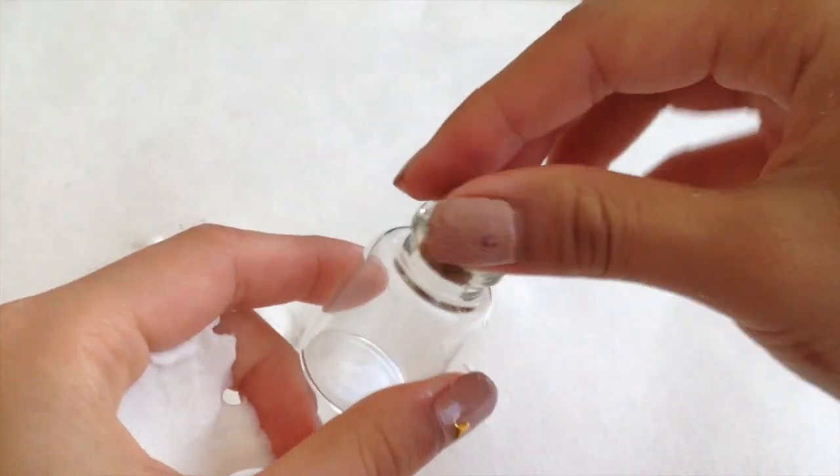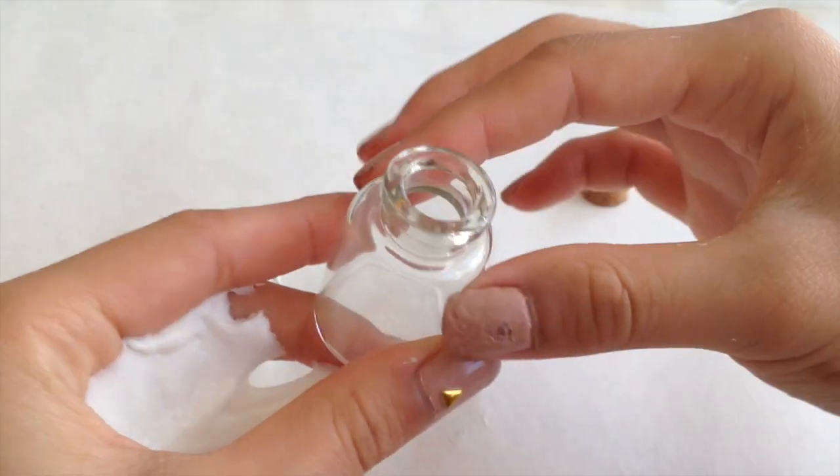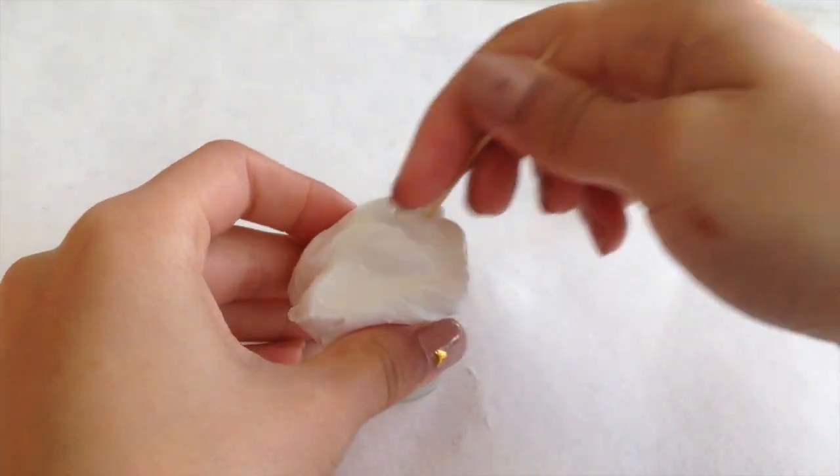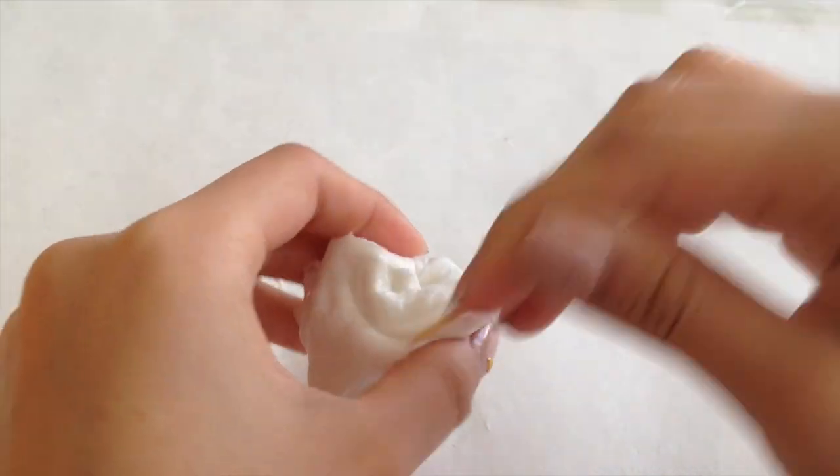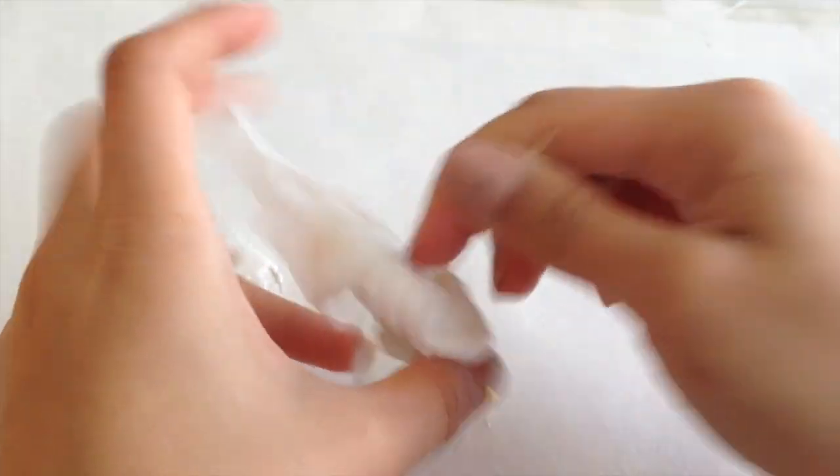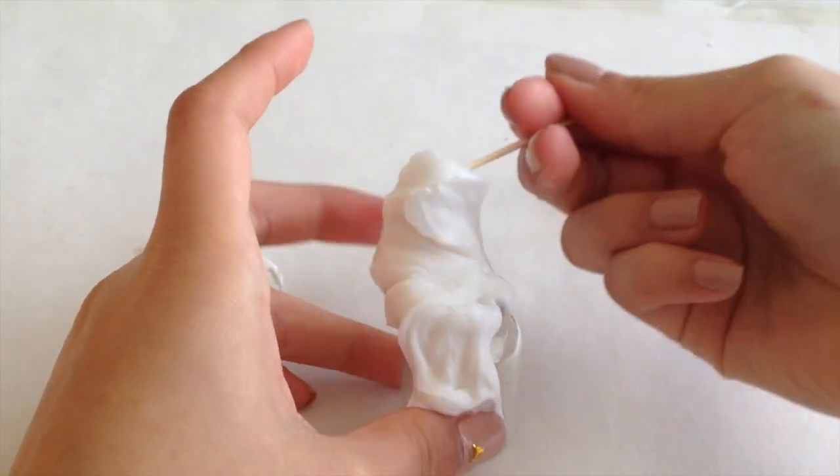I am going to go ahead and fill the slime inside the bottle to make it look like a bottle of milk. So to fit the slime into the bottle I just place the piece of slime onto the bottle and I used a toothpick to kind of push the slime into the bottle.